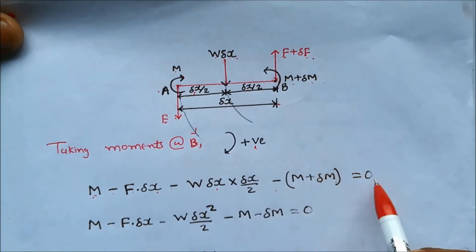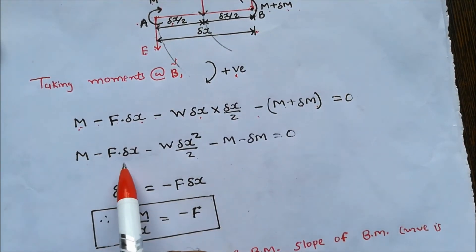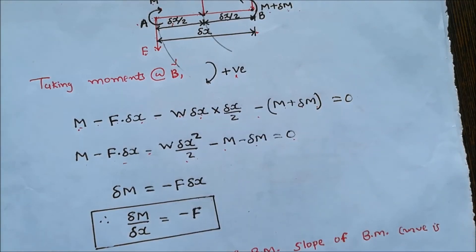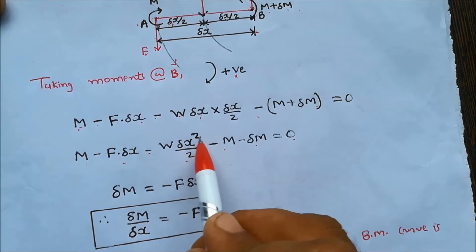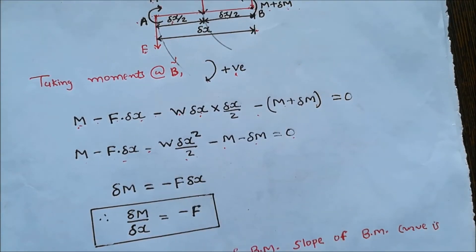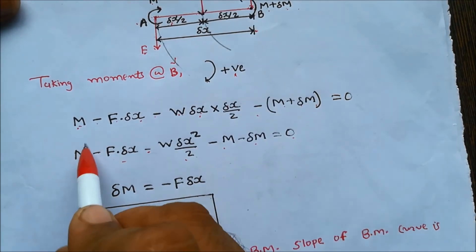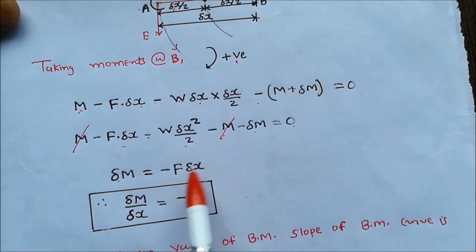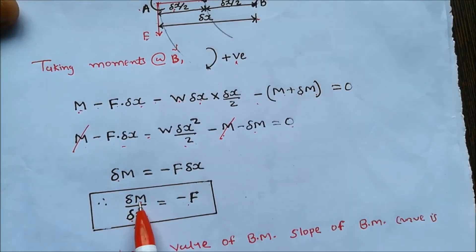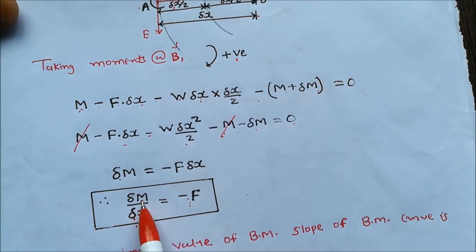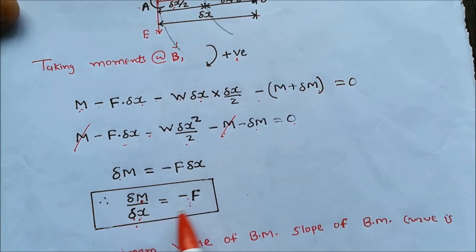Expanding: M minus F into delta x minus W into delta x squared by 2 minus M minus delta M equals zero. Since we consider a small portion, delta x squared is very very small and is neglected. M and M cancel out, and simplifying we get delta M equals minus F into delta x. Therefore delta M by delta x equals minus F. The rate of change of bending moment with respect to distance is equal to the shear force at that section.